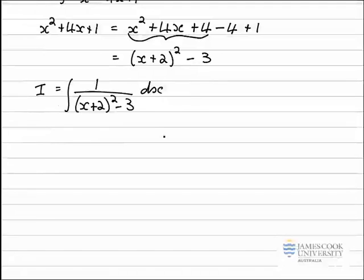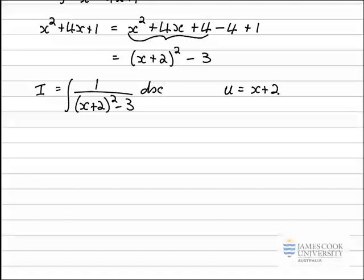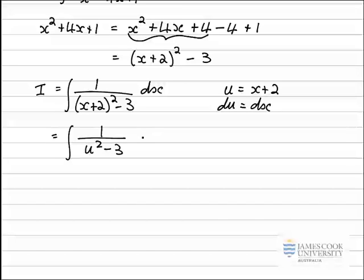So I've got a perfect square here with a linear term. It's always good to make a substitution for a linear term. So we'll try and integrate this by letting u equal x plus 2. du/dx here is just 1, so that means du is equal to dx. I substitute all those in and get the integrand in terms of u, and dx transforms to just du.